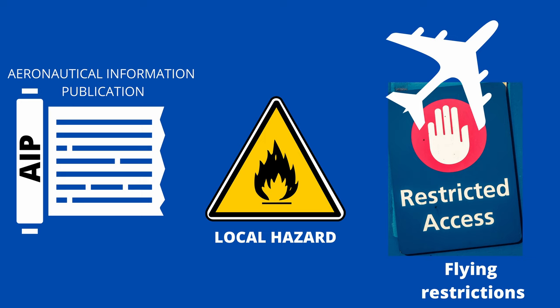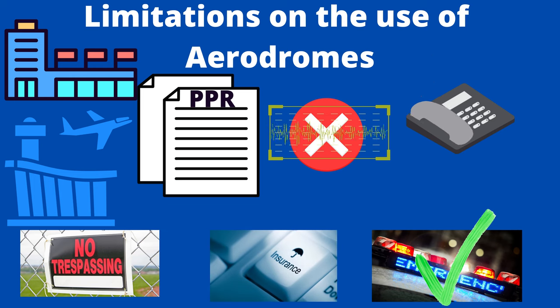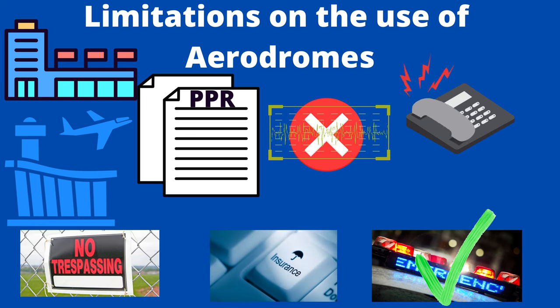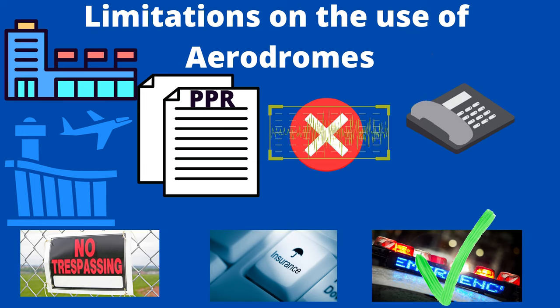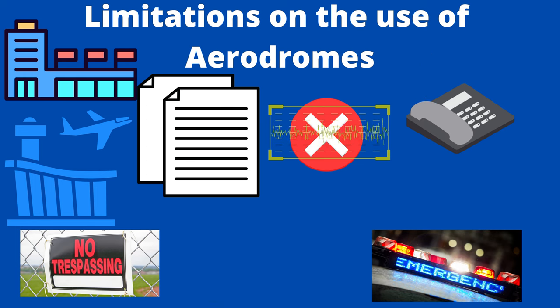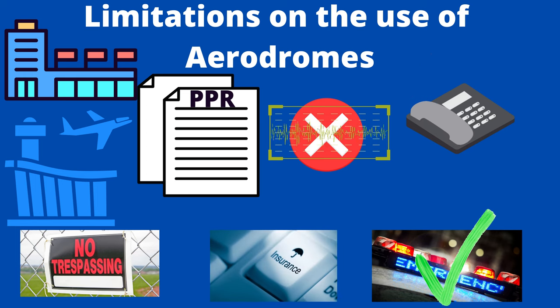Limitations on the use of aerodromes: certain restrictions apply at some aerodromes and not at others. At military aerodromes and at civil aerodromes with an ordinary licence, prior permission to land is needed from the aerodrome authority, and at unlicensed aerodromes, the prior permission of the owner or person in charge. This may be designated in documents as PPR, which stands for Prior Permission Required. PPR usually means that you should telephone the airfield operator or owner before departure, particularly if there is no radio frequency published for the airfield.